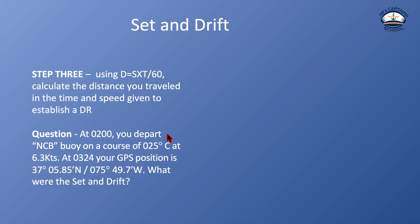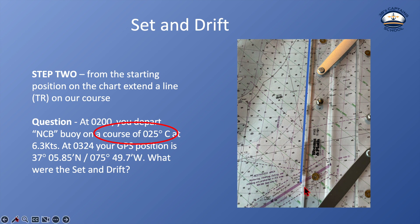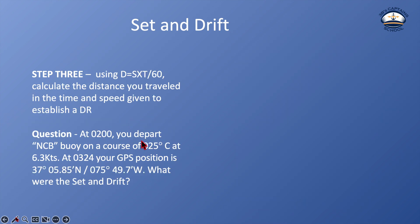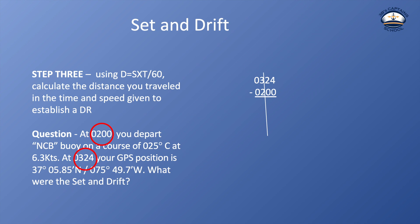Now I need to figure out where on this line I am — that's where I should have been. If I was driving on that course of 025 compass, converted to 015 true, I'm on this line somewhere. What distance should I have traveled if I left at 0200 at a speed of 6.3 knots and I'm looking at my GPS position at 0324? To find the time difference: put 0324 on top, minus 0200. I get 24 minutes on the minute side, 1 on the hour side — so I traveled for 1 hour and 24 minutes.